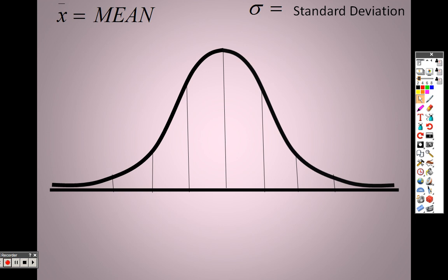Before we get started: that slanted X with a line over it is our abbreviation for mean. So if I'm talking about the mean, or average, of something, we'll use that slanted X with a line over the top. And that other sign stands for standard deviation, so when we're talking about standard deviation, you'll see that symbol.